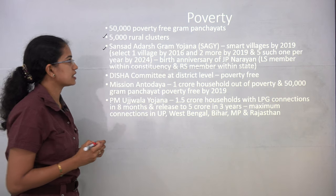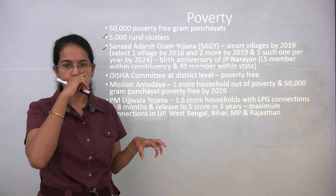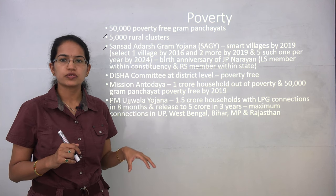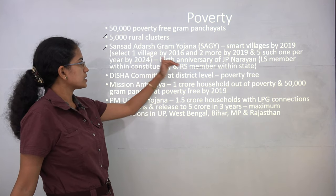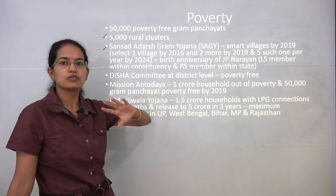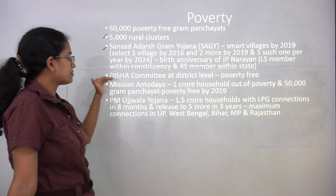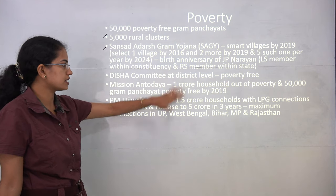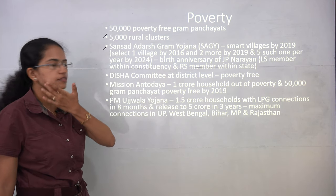One interesting scheme is the Saansad Adarsh Gram Yojana, which talks about adopting a village by a Member of Parliament. For Lok Sabha members, it would be a village from their own constituency; for Rajya Sabha members, from the state. By 2016 they adopt one village, by 2019 two villages, and by 2024 five more villages — one each year. The DISHA committee works at the district level to make villages poverty-free.